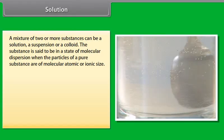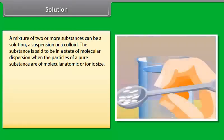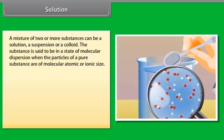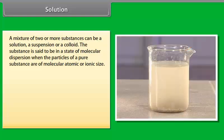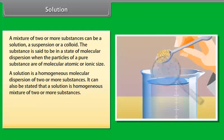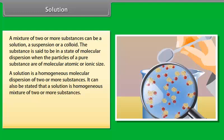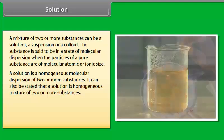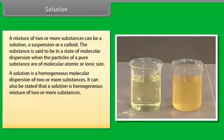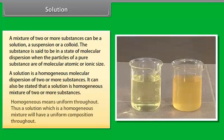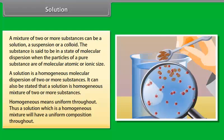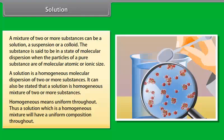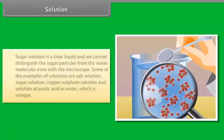Activity: A mixture of iron and sulfur is taken in a dish and a magnet is brought near it. Only the iron filings get attracted to the magnet. When carbon disulfide is added to the mixture, the sulfur particles dissolve while the iron filings remain unaffected. We can understand that individual components of a mixture retain their original properties — iron retains its property of getting attracted to a magnet, and sulfur retains its property of dissolving in carbon disulfide.